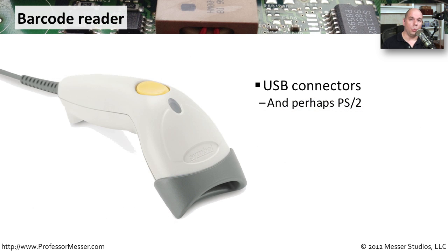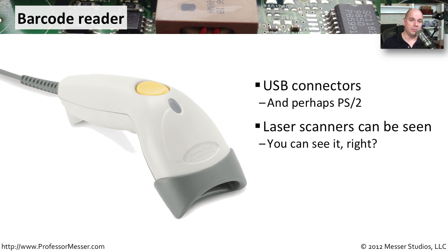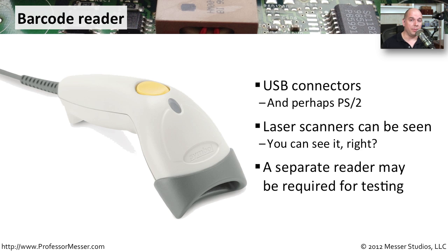If you're in a retail or warehouse environment, you're probably familiar with using a barcode reader as an input device. It takes a barcode printed on a device and scans it — that connection is usually made through USB, although some older barcode readers might also use a PS2 mouse port. This often uses a laser to read the barcode, so you'll see a red light coming out of the end of the reader. You have to be very careful not to view that light directly, because lasers can damage your eyes. If you're having problems with a barcode reader, you'll probably have to replace it, as these are single-use function devices with very few configuration settings.